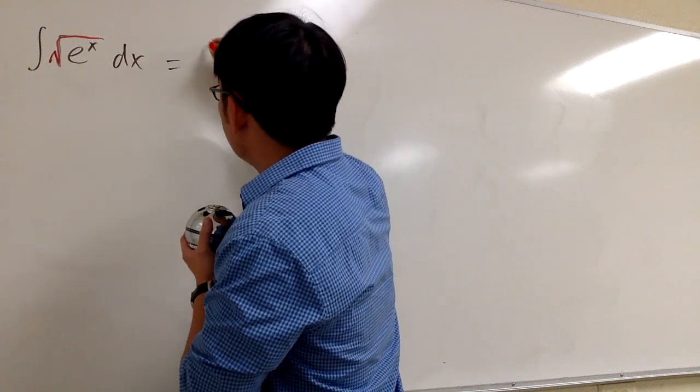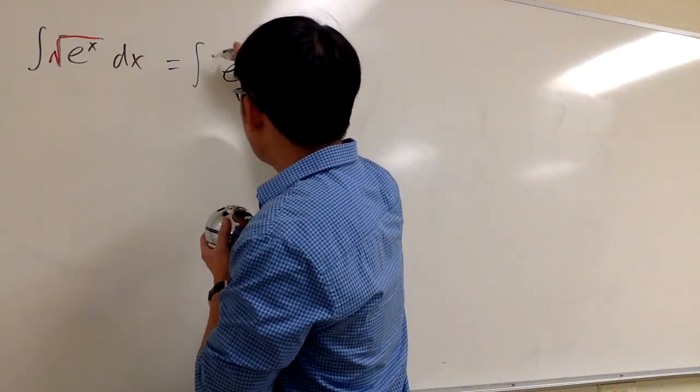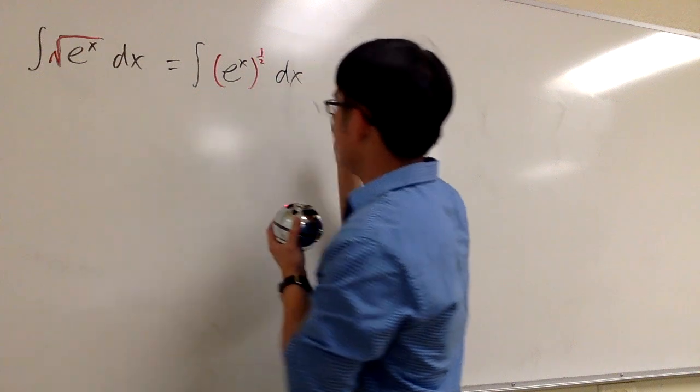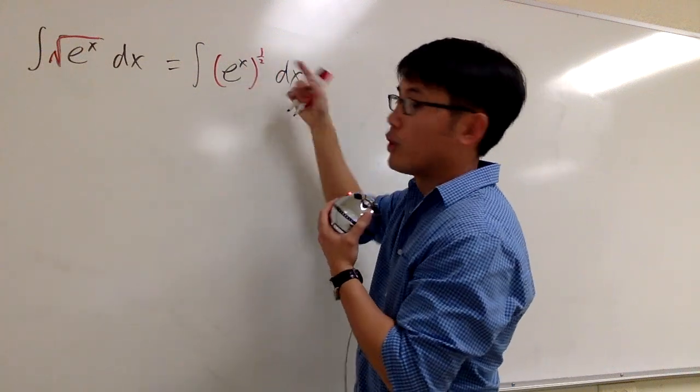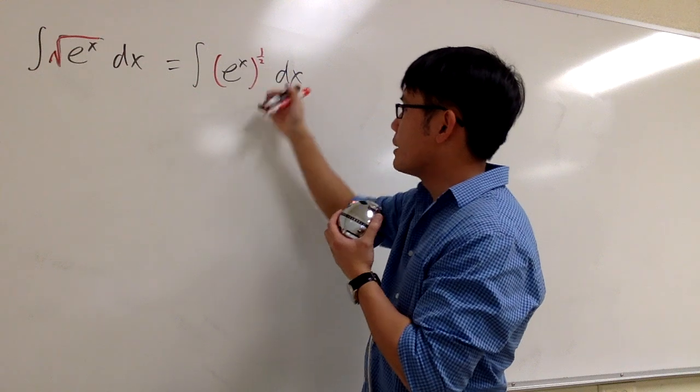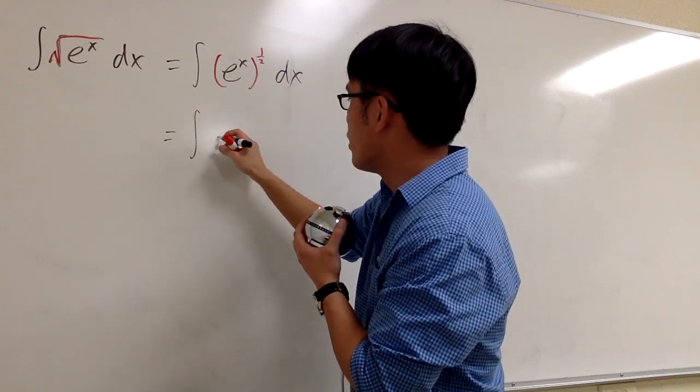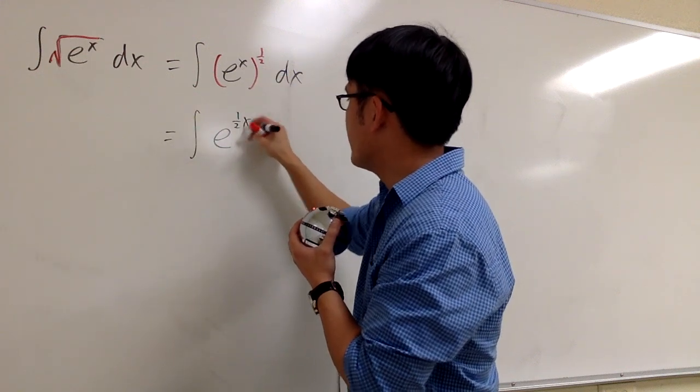We can change this to the integral of e to the x inside raised to the 1 half power dx. And then here we have e to the x raised to another power. What do we do? We just need to multiply the power. So this is the same as asking what's the integral of e to the 1 half x.